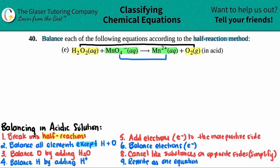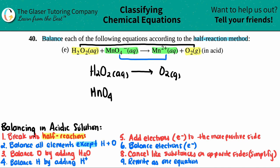Now I have my two half-reactions. Let's write them out. We have H₂O₂ aqueous yielding O₂ gas. And then we have MnO₄⁻ aqueous yielding Mn²⁺ aqueous. Step one is done.